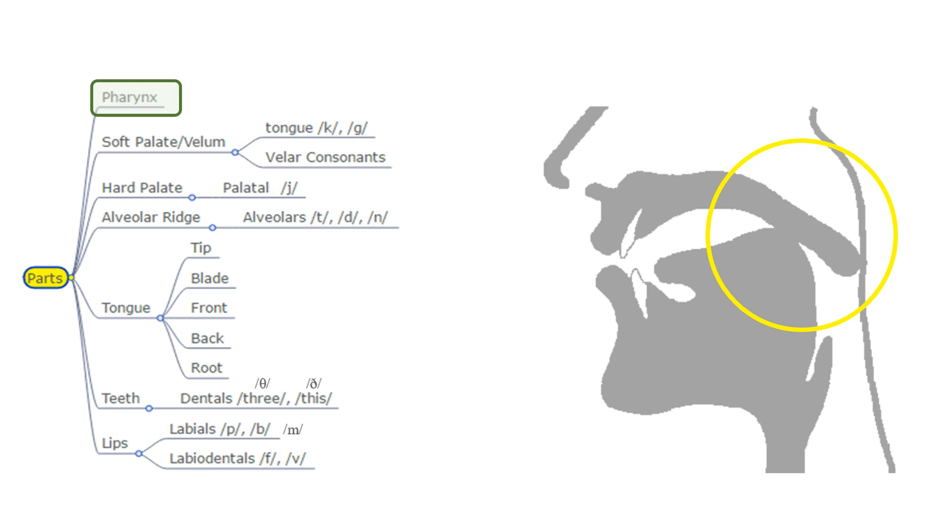The pharynx, a tube just above the larynx. The soft palate or velum, it controls the oral nasal cavities. The sounds produced at the soft palate are called velars.